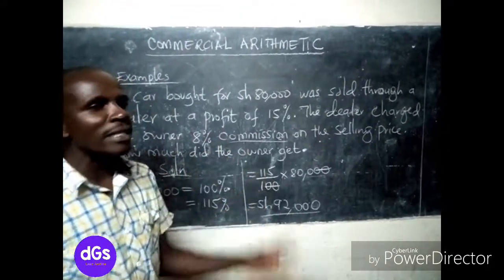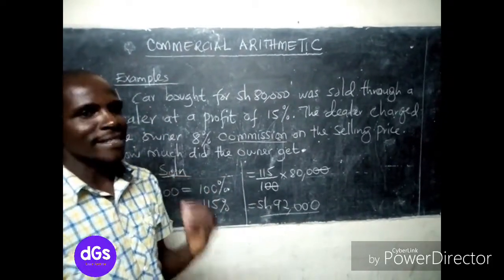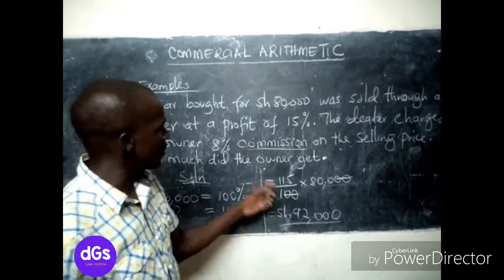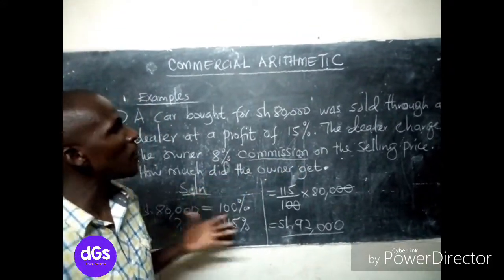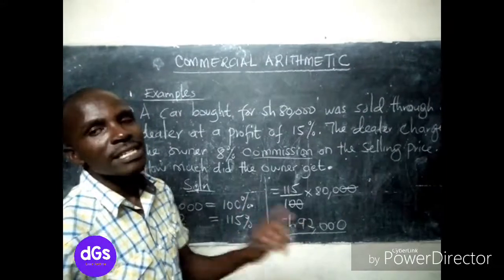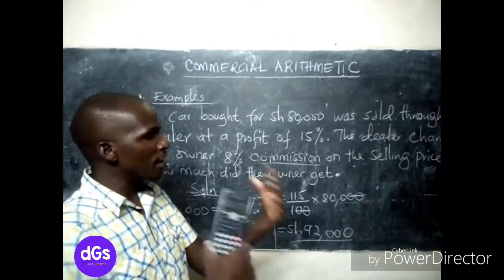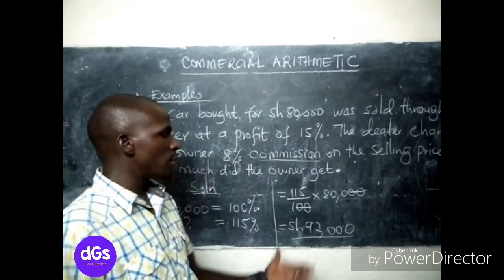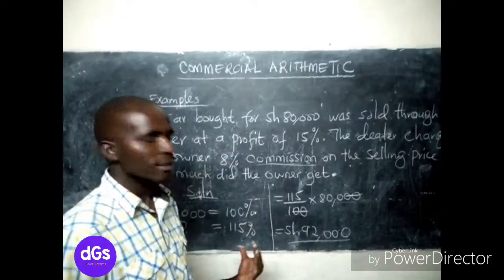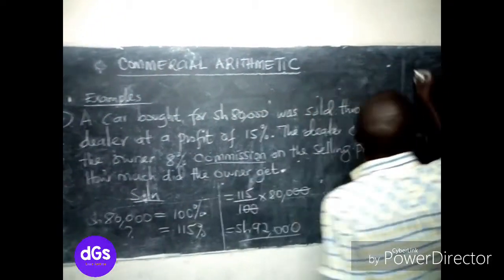In this selling price, the dealer gets a commission of 8 percent because he is the one who sold the car. So 8 percent goes to the dealer and the remainder goes to the owner of the car.